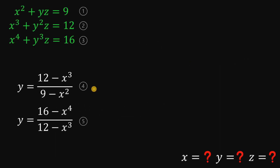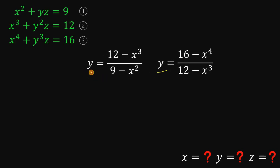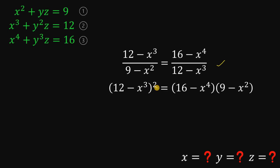Taking equations 4 and 5, note that both are equated to y, meaning these two expressions are equal. So we can say that 12 minus x cubed over 9 minus x squared equals 16 minus x raised to the fourth power all over 12 minus x cubed. Now we have a rational equation with only one variable, x, so we can solve for the value of x. To do that, let's cross multiply.